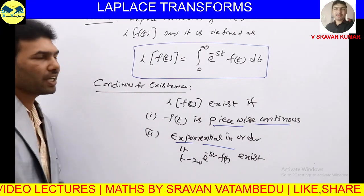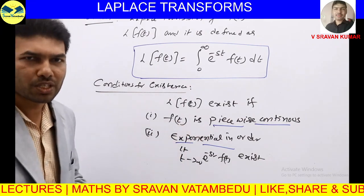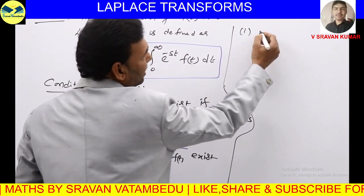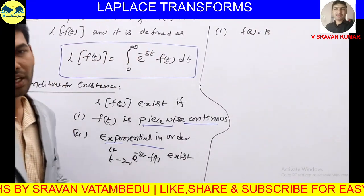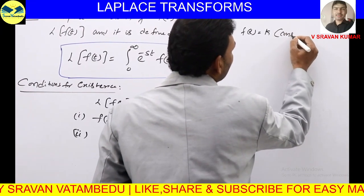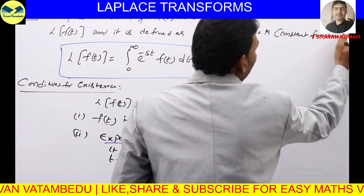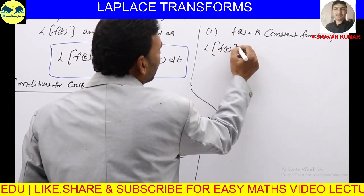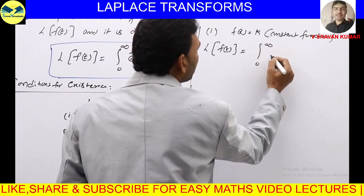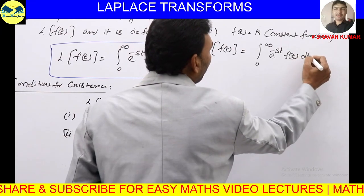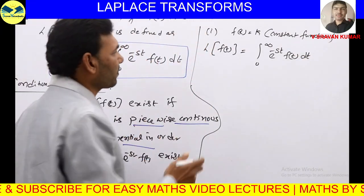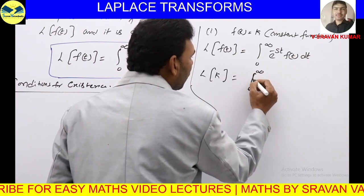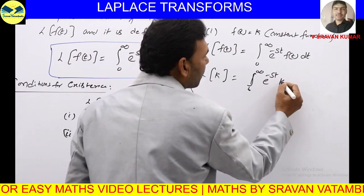For example, if the given function satisfies these two conditions, how do we find its Laplace transform? Let F(t) = K, a constant function. What is the Laplace transform of constant K? L{K} equals, using the formula, the integral from 0 to infinity of e^(−st) · K dt.